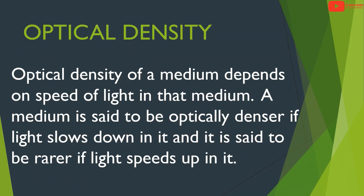Next, optical density. Optical density of a medium depends on the speed of light in that medium. A medium is said to be optically denser if light slows down in it, and it is said to be rarer if light speeds up in it.